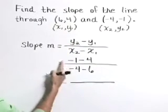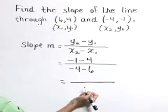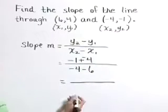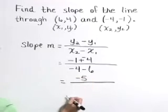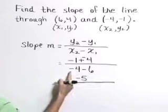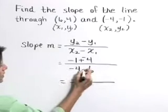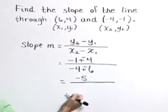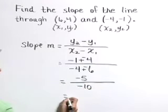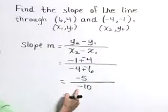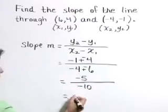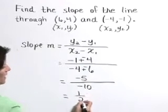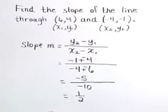Now let's subtract. In the numerator, think of that as negative 1 plus negative 4, or negative 5. In the denominator, that's negative 4 minus 6, or plus a negative 6, which gives negative 10. Negative 5 over negative 10 results in positive 1 half in lowest terms. So the slope of the line through 6, 4 and negative 4, negative 1 is 1 half.